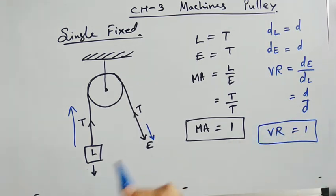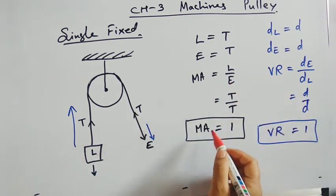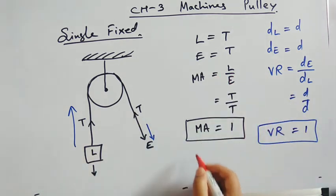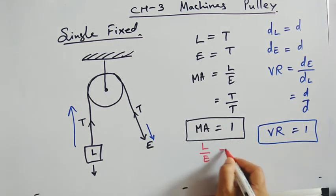Velocity ratio is nothing but ratio of distance moved by effort to distance moved by load. Now mechanical advantage of the pulley is 1. That means the ratio of load to effort is equal to 1. That means load is equal to effort.